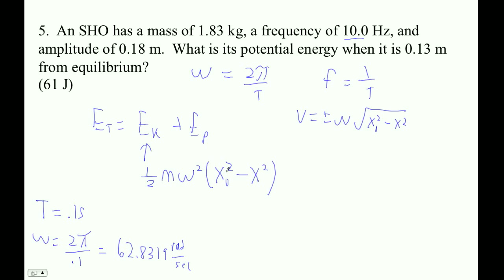Okay, so now let's see. What is its potential energy? I think what I want to do is I want to find, there's its amplitude. Let's find the total energy first. So next thing to do, let's find the total energy: ½mω²x naught squared. So ½ times 1.83 times this number here, ω squared, 62.8319 squared.